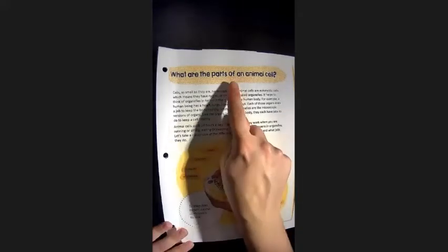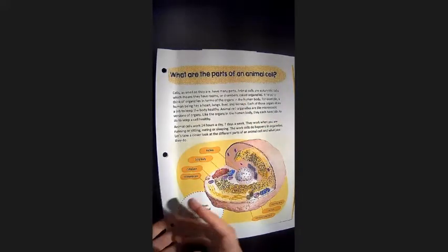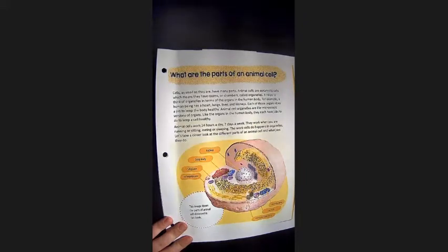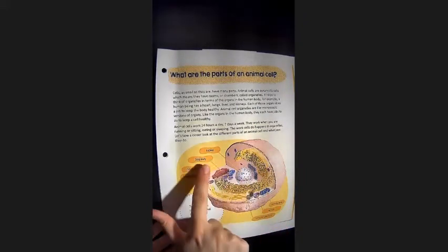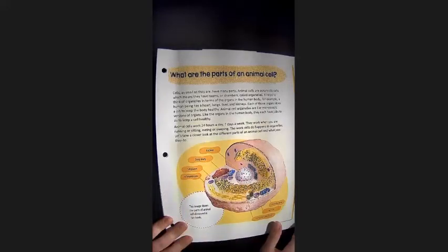There's a lot of information in this chapter, but it will help to look first at the structure. So when I look at this first subheading, I see what are the parts of an animal cell.